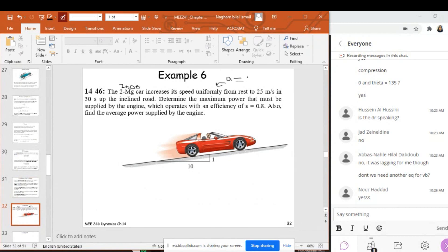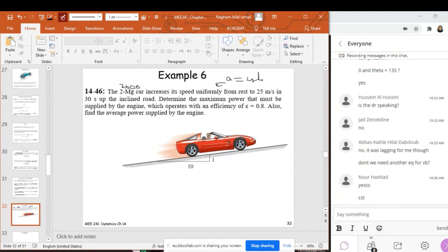What does uniformly mean? It means a is equal to constant. It's uniformly increasing from rest, which means v₀ equals 0, to 25 meters per second in 30 seconds.